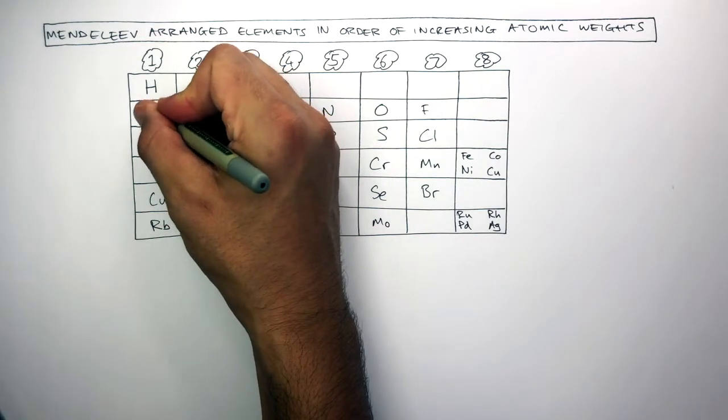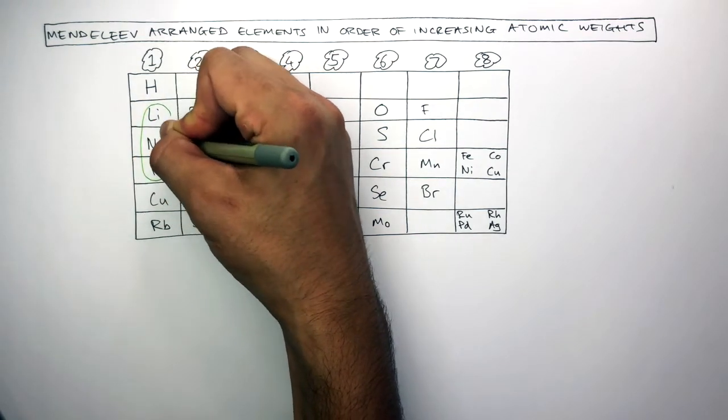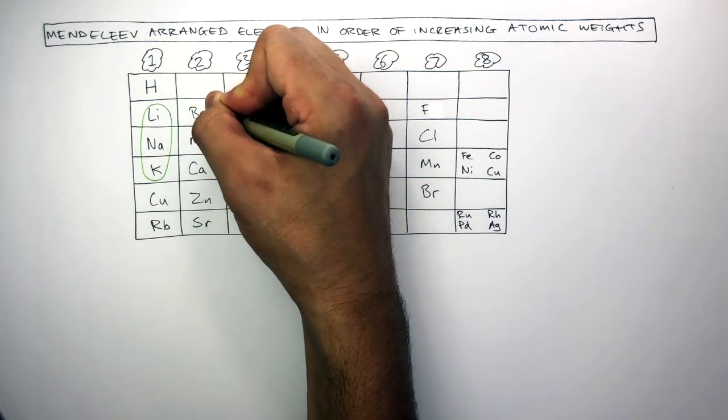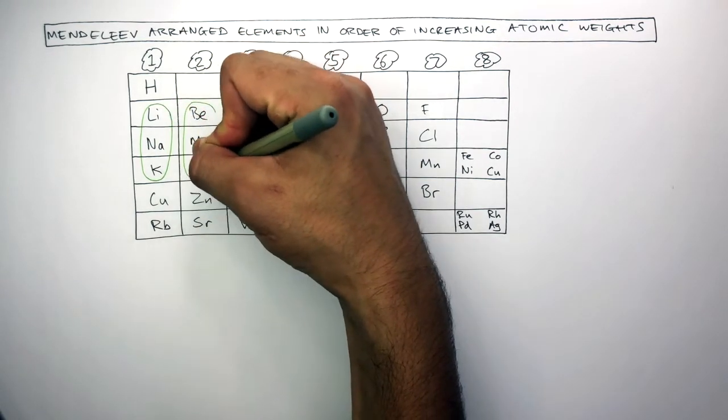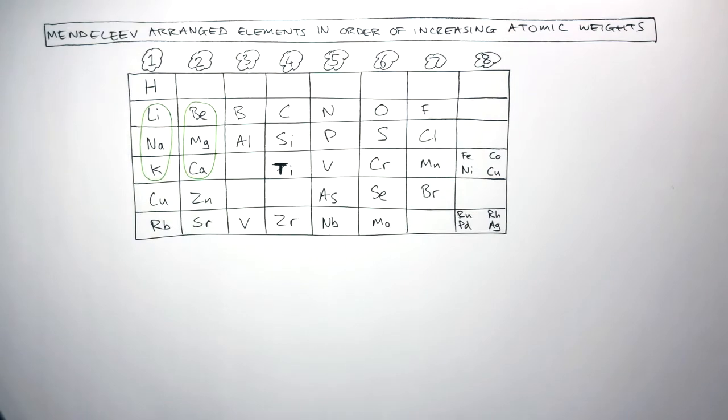We can see how in group 1, lithium, sodium and potassium are in the same group and in group 2, beryllium, magnesium and calcium are also in the same group.